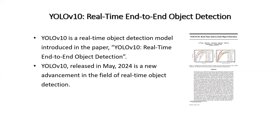The previous YOLO models including YOLO V9, YOLO V8, and YOLO V7 were using a non-maximum suppression (NMS) technique in post-processing during inference, which leads to inefficiencies and increased inference latency time. YOLO V10 eliminates the need for NMS, and along with this, architecture enhancements are made which include optimizing various model components.